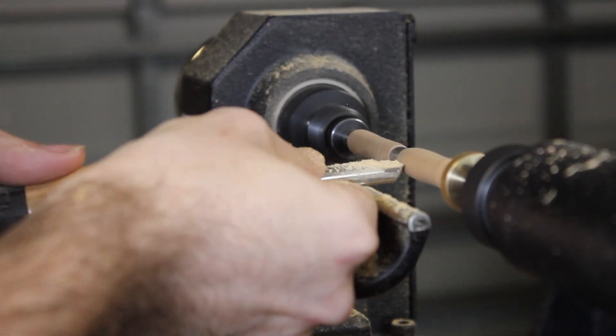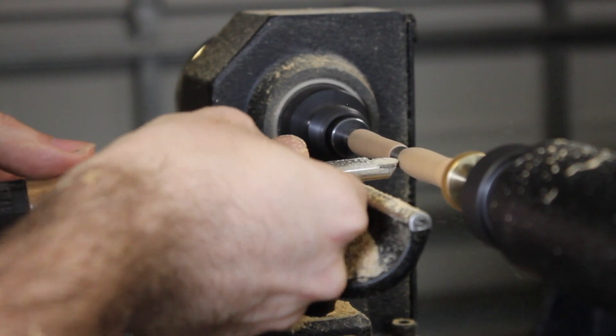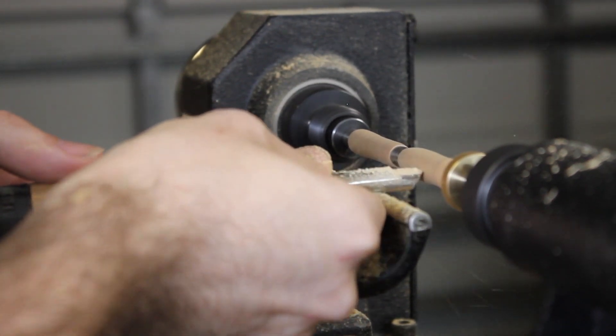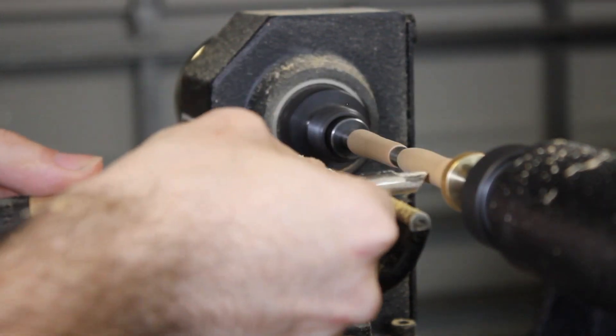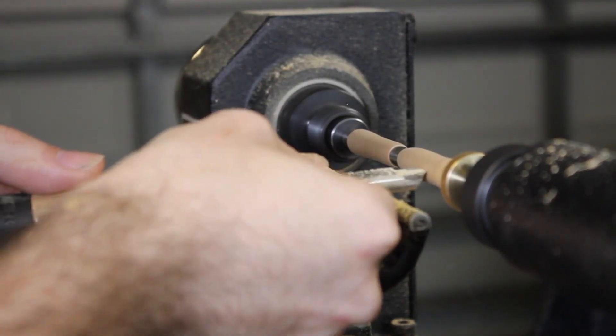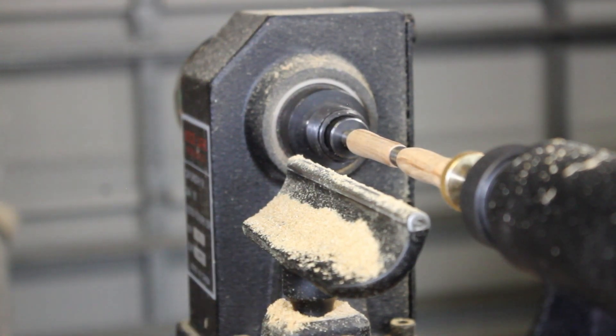I do recommend stopping the lathe every once in a while just to get a better look of what the pen is looking like. Make sure we don't have any cracks or any issues to address while we're working on it, since it spins so fast it's hard to tell what's actually going on other than just the general shape.